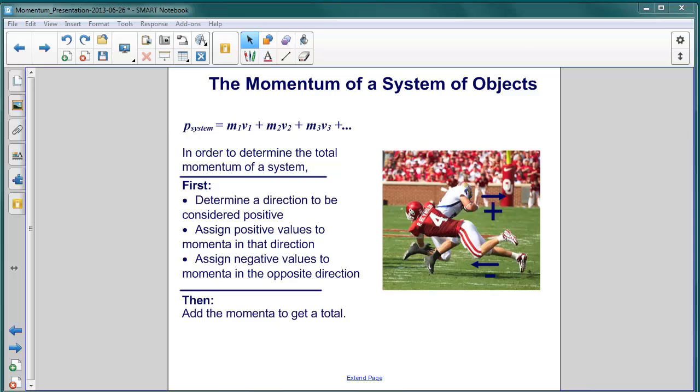In the case of the football players in the picture on the right, you can see that the player in predominantly white is moving to the right. We've assigned positive to that motion, and so the momentum of that player will be positive. The opposite direction will be considered as negative, and in this case the player in red, and we'll assign a negative value to the momentum in that direction.